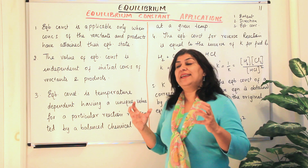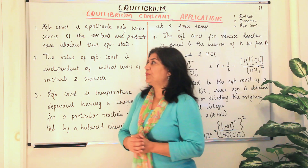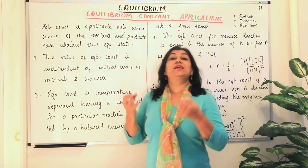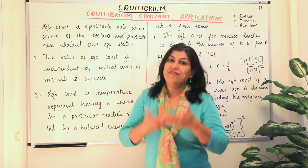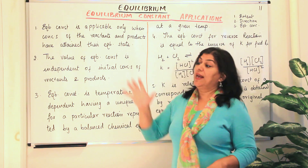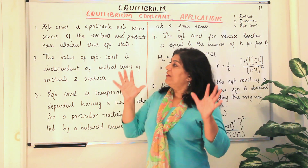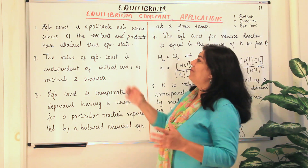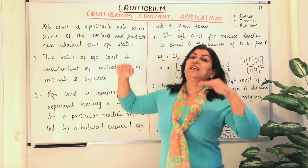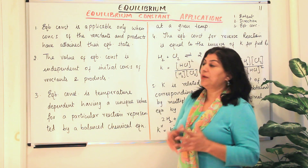First of all, we must understand when the equilibrium constant is significant, so let us revise it once more. The first point about equilibrium constant is that it is a value which can be calculated only when a system is in equilibrium — when the reaction is proceeding at the same rate in the forward and the backward direction, and the concentrations and partial pressures, if they are gases, become fixed. So equilibrium constant is applicable only when the concentrations of the reactants and products are fixed and have attained an equilibrium state.